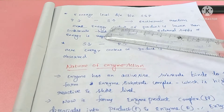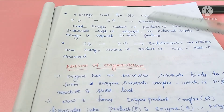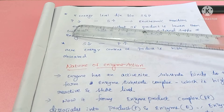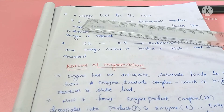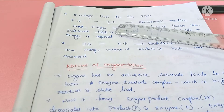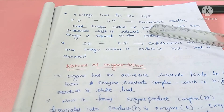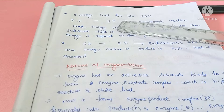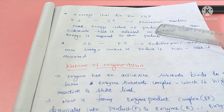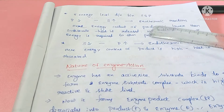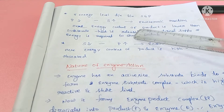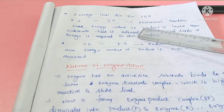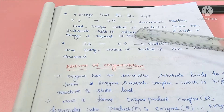Let's consider the energy level difference between substrate and product. We have two types of reactions. P is product and S is substrate. In one case, the substrate is at a high energy level and the product is at a low energy level — that reaction is called an exothermic reaction. Exo means outside, thermic means heat. In an exothermic reaction, heat is released to the surroundings.